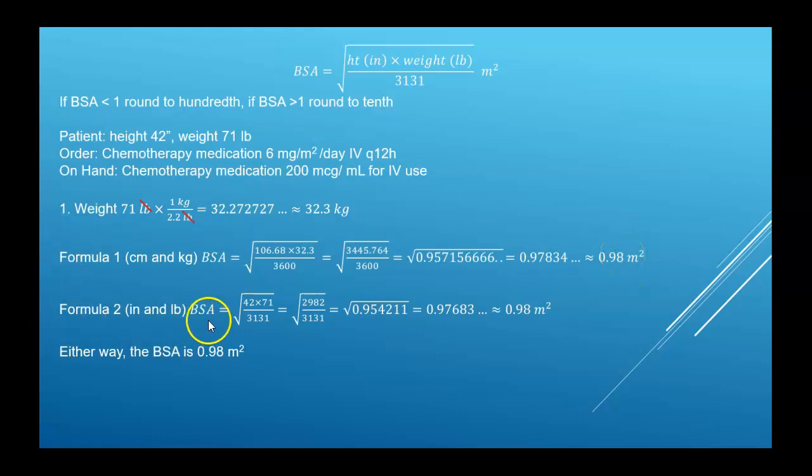So here's the second formula using pounds and inches. So we multiplied, divided by 3131, took the square root and ended up at just about the same, very minute difference, but when you round it is the same. So either way the BSA is 0.98 meters squared.